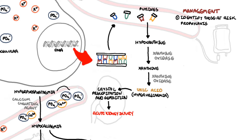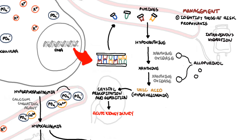Prophylaxis in these patients includes vigorous intravenous hydration, 3 liters in 24 hours. On top of intravenous hydration, allopurinol is used. Allopurinol is a xanthine oxidase inhibitor, commenced about 2 days pre-chemotherapy — it lowers serum urate levels and helps reduce complications of hyperuricemia.